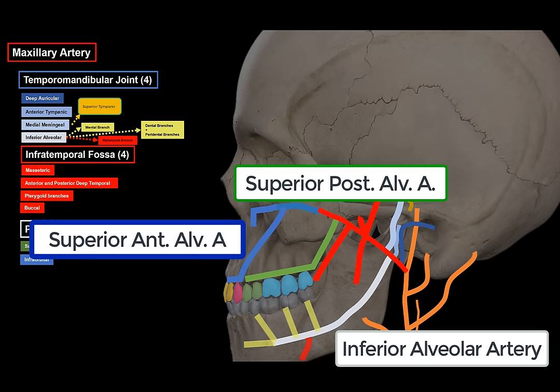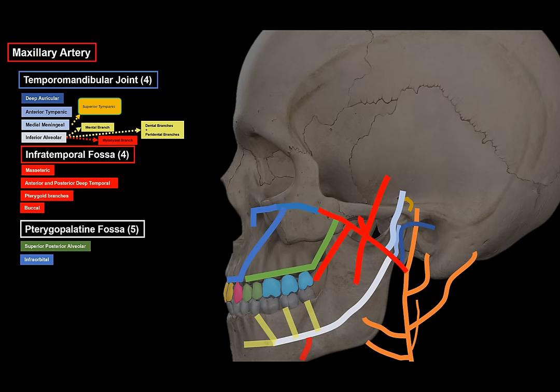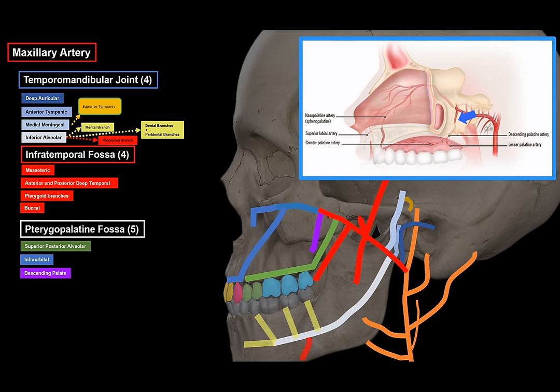Continuing into the pterygopalatine fossa, the maxillary artery gives off the descending palatine artery. It travels within the pterygopalatine fossa and enters the greater palatine canal, exiting around the second and third molars. It divides into the lesser palatine and greater palatine arteries, supplying the hard palate, the soft palate, and the gums.